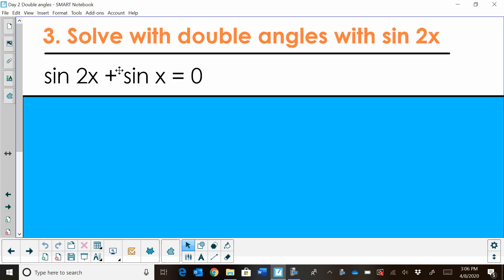Solving with the double angle formula, sine of 2x. So we have sine of 2x plus sine of x is equal to zero. Well, we have a slight problem right here. One of our sine values has a double angle and one does not.